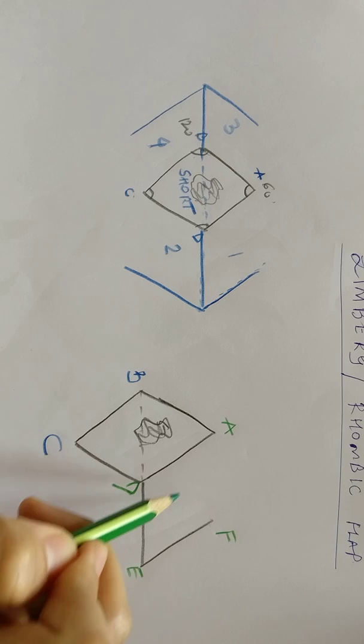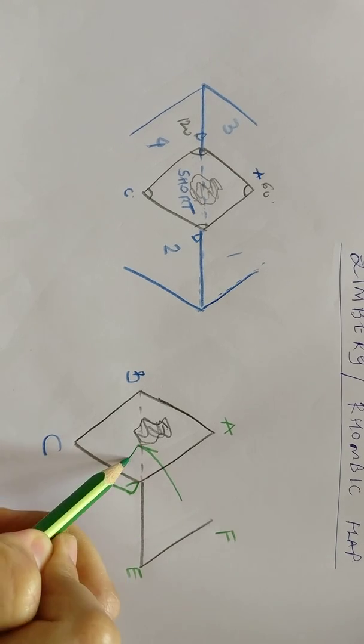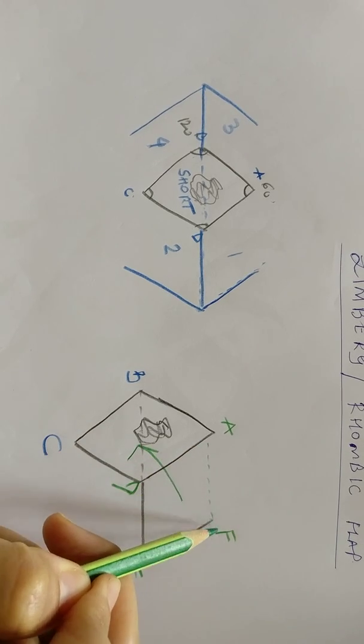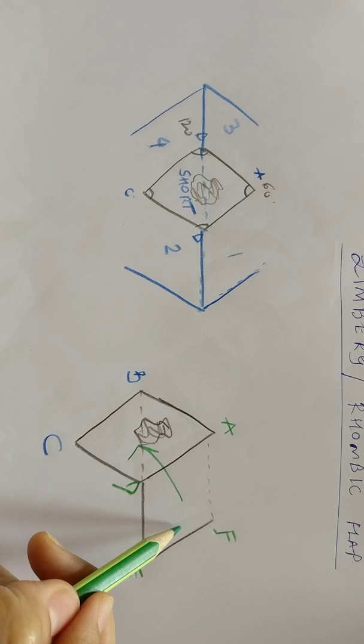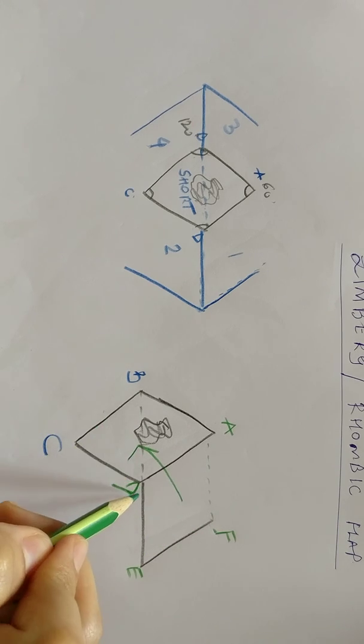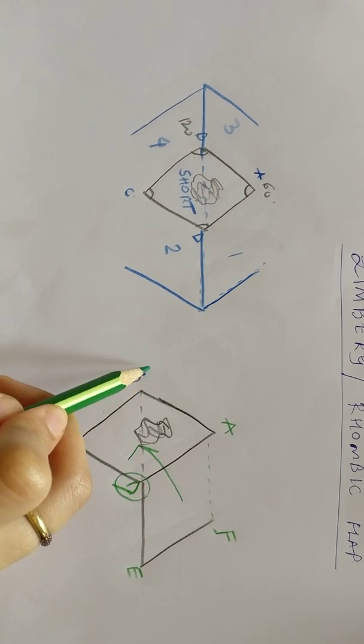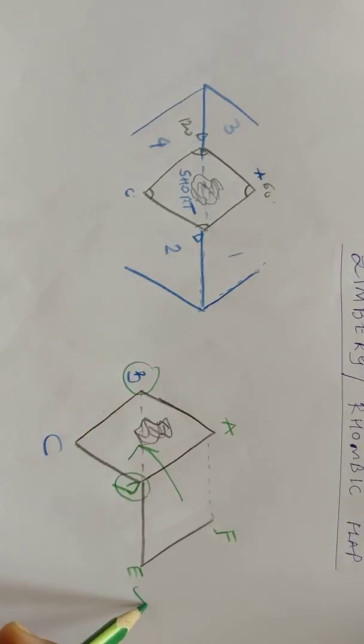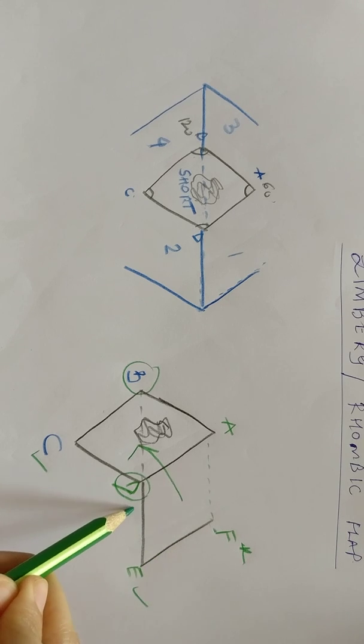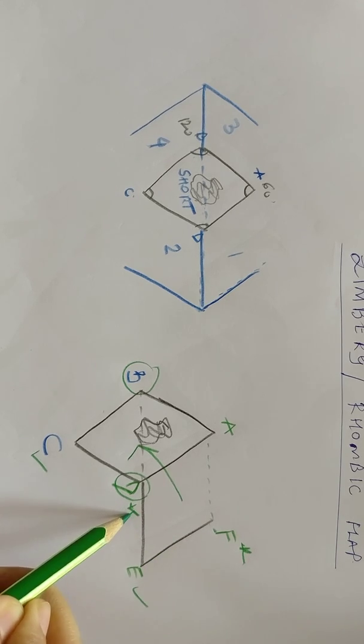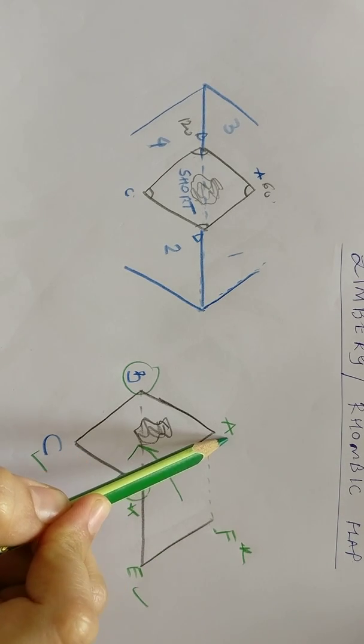Our flap is going to move in this direction and this is the base of the flap from where the blood supply is coming in. Once the flap moves in this direction, point D is going to sit at point B, point E is going to come where point C is, and ultimately point F is going to come in position of point D. A is going to stay where it is.